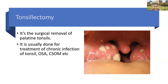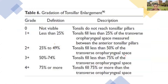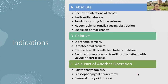Tonsillectomy is the surgical removal of the palatine tonsils, done usually for chronic infection, associated OSA, and CSOM. There is a grading for tonsillar enlargement depending on how much space they occupy in the transverse oropharyngeal space between the anterior tonsillar pillars, graded from 0 to 4 plus. Grade 0 means they are not visible, while 4 plus means tonsils fill 75% or more of that space — commonly known as kissing tonsils. Absolute indications include recurrent throat infections, peritonsillar abscess, tonsillitis causing febrile seizures, hypertrophy causing obstruction, and any suspicion of malignancy.